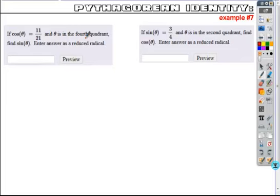The first thing that you would do is you would set up the Pythagorean identity. So you'd look at it as cosine squared theta plus sine squared theta equals one. If you substitute in 11 over 21 for cosine, and then you want to solve for sine.